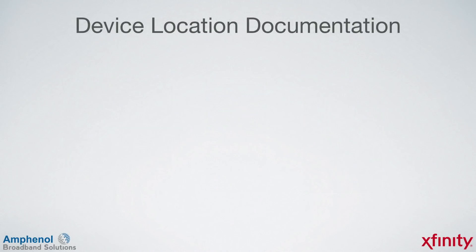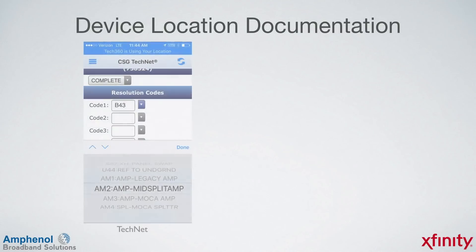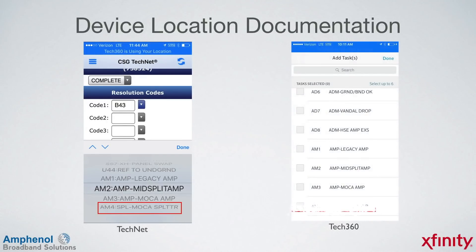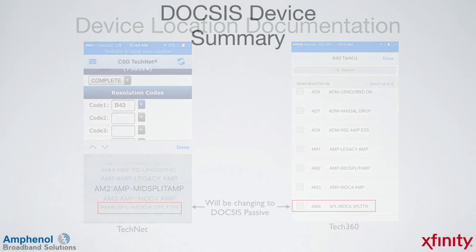In order to keep track of which accounts the DOCSIS passive devices are installed in, it needs to be entered into either TechNet or Tech360. Currently it's indicated as a MOCA splitter, but it will be changing to a DOCSIS passive.